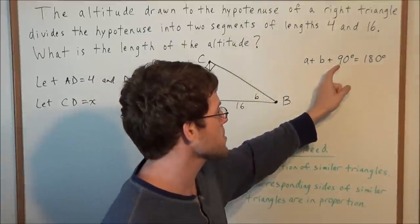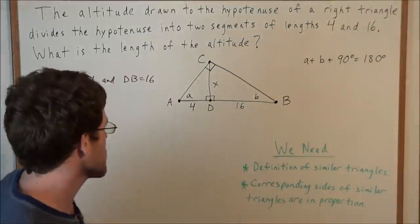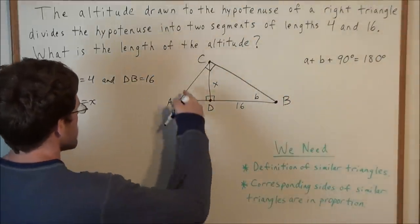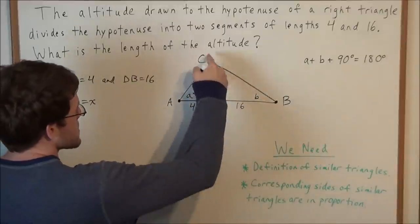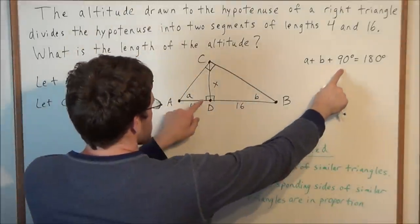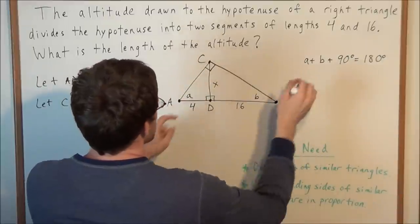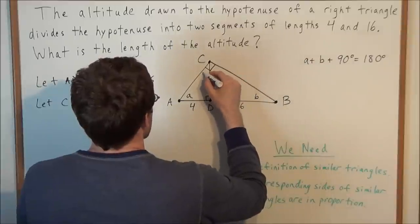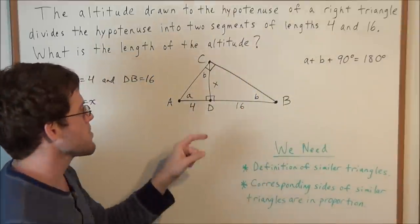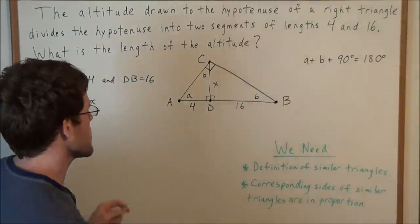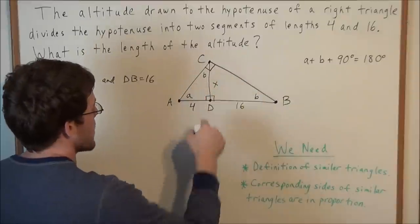Well, in the beginning we said that A plus B plus 90 degrees equals 180 degrees. And notice how in triangle ADC, it has a 90 degree angle and it has angle A. So the missing angle has to be angle B. Since we already assumed in the beginning of the problem that A plus B plus 90 degrees is 180 degrees, so this missing angle has to be angle B.